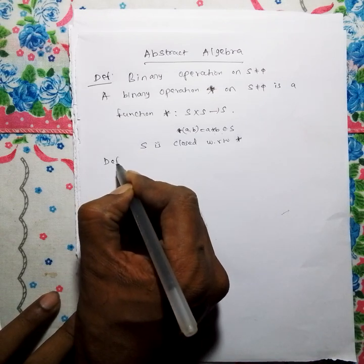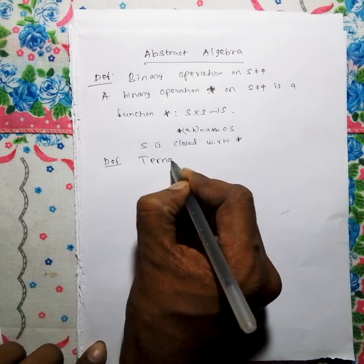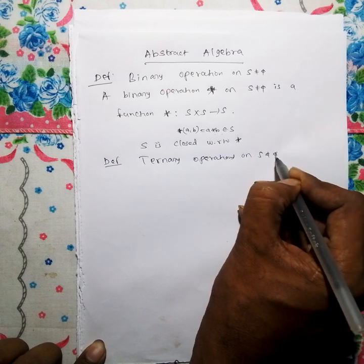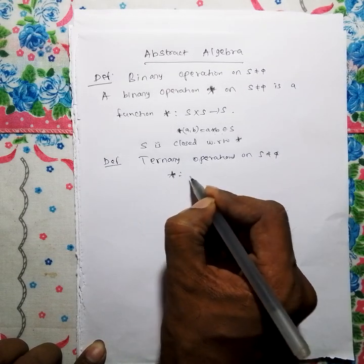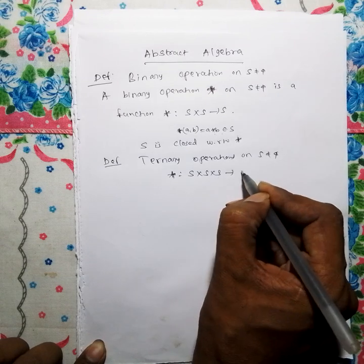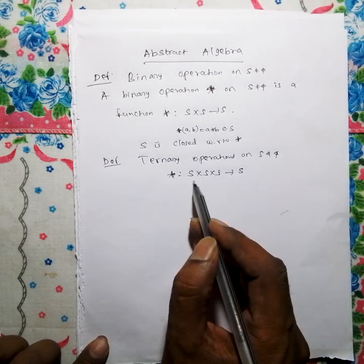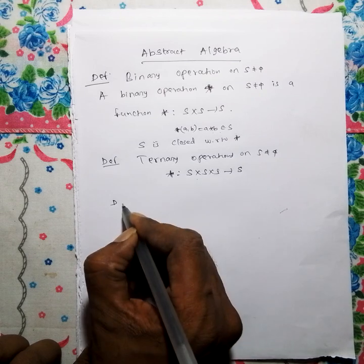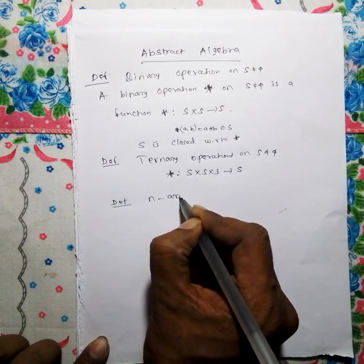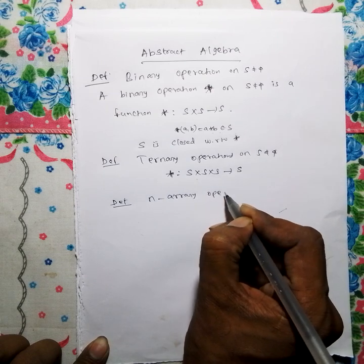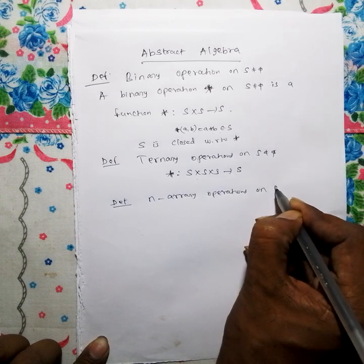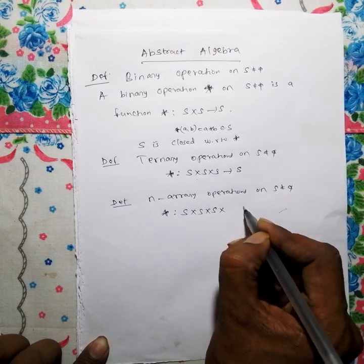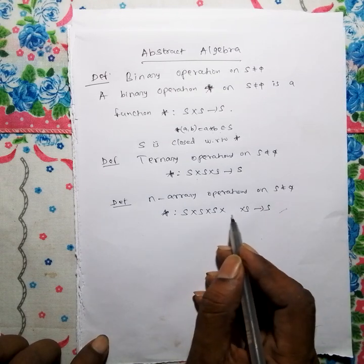Next one is ternary operation. A ternary operation on S is a function from S cross S cross S to S — three elements are mapped to one element. More generally, an n-ary operation is a function from S cross S cross ... cross S (n times) to S.